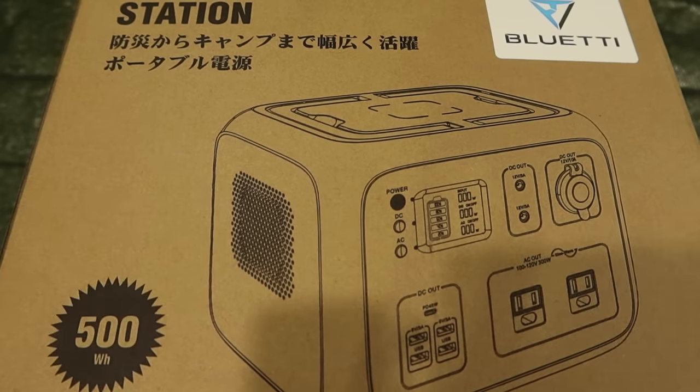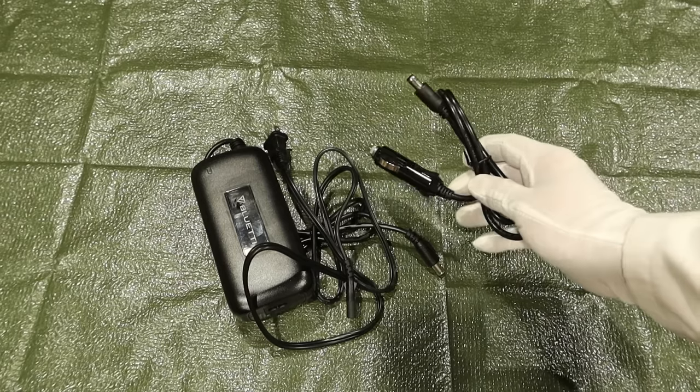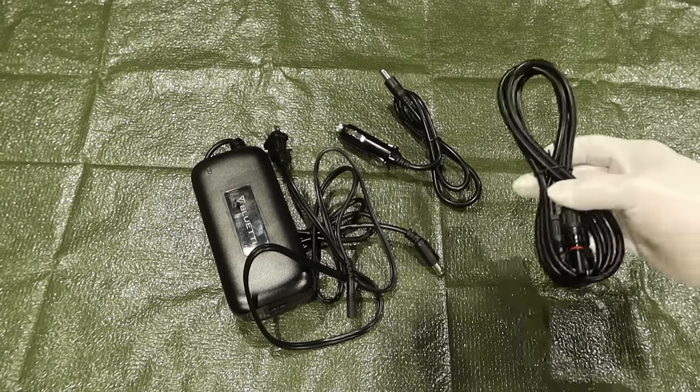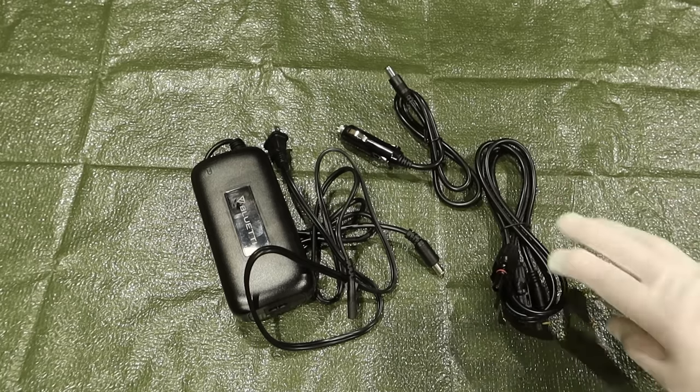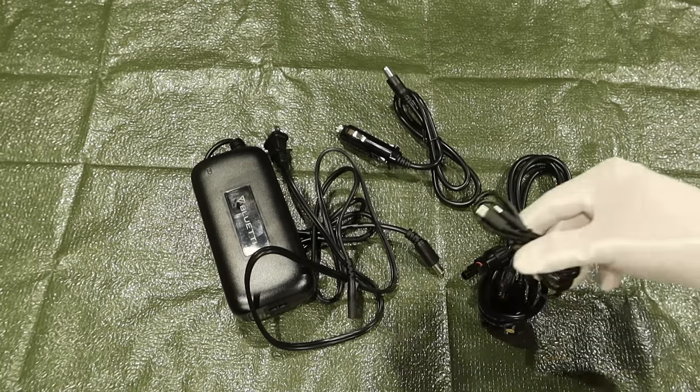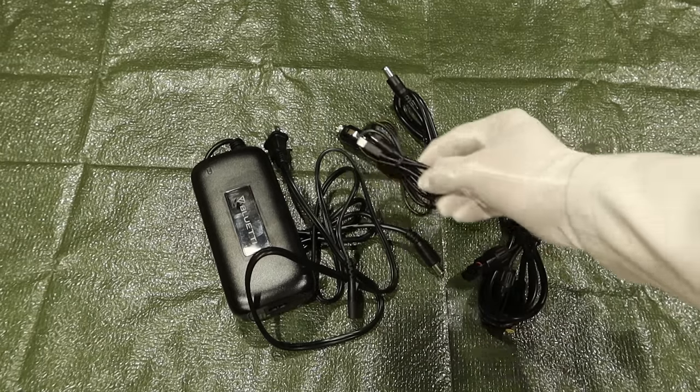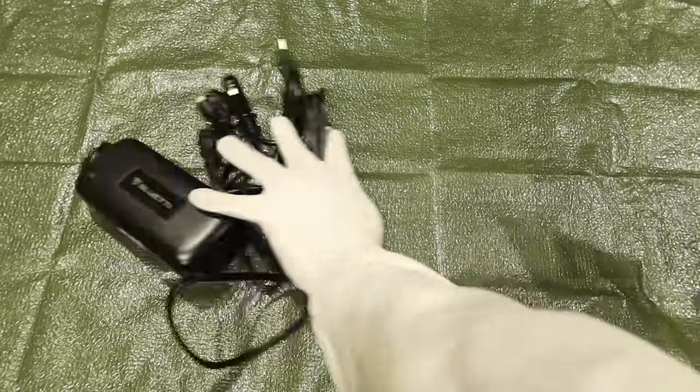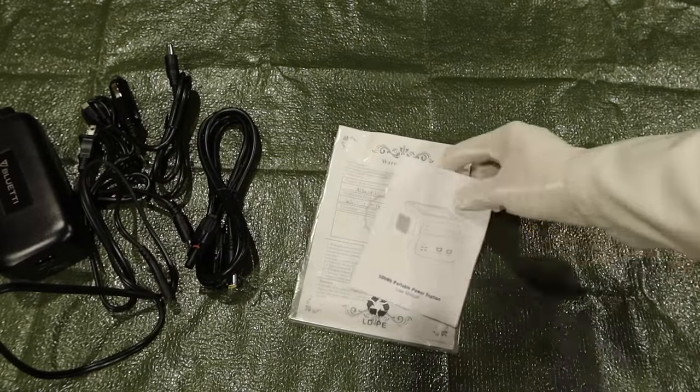So what comes in the box? Of course you get the 90 watt AC wall charger, the 12 volt 24 volt cigarette lighter input, an MC4 to 8 millimeter input cable that's for solar obviously, and they give you a USB-C cable so that you can charge your USB-C devices.